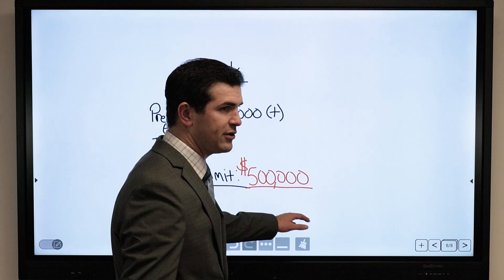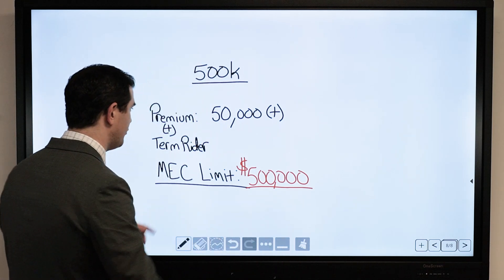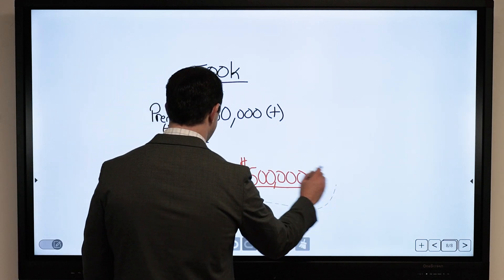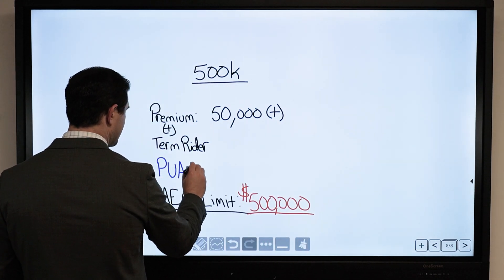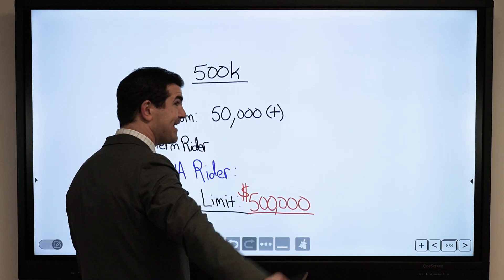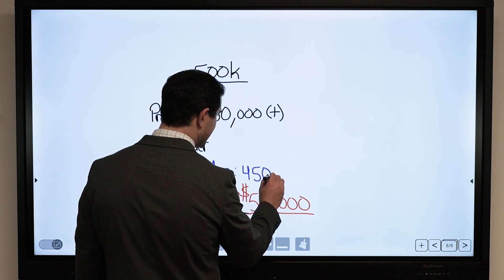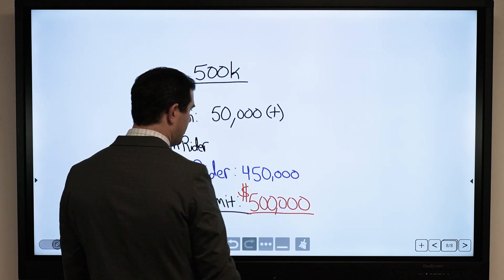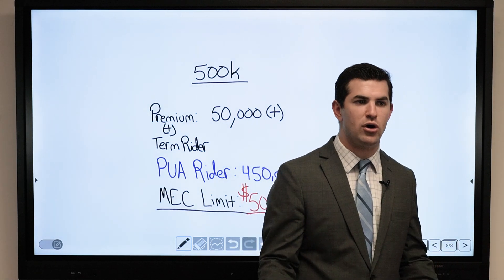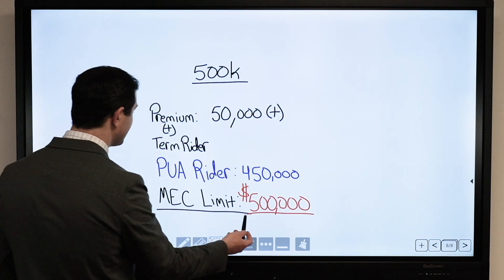The MEC limit is set at a clean $500,000, and the death benefit in this example is just over $7,000,000 — that's how much death benefit we needed to support that MEC limit. Everything else is going into the PUA Rider component, driving cash value acceleration and death benefit acceleration. What's interesting is when you funnel money into the PUA component, the death benefit actually appreciates at a greater rate long-term, especially when looking at the guarantees.